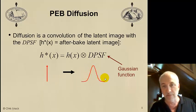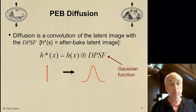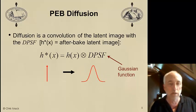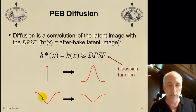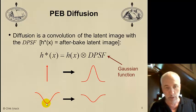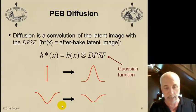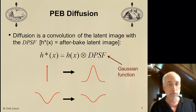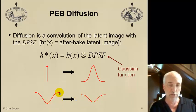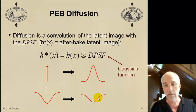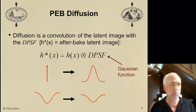This is the Gaussian function we're interested in. If I have some latent image — H of X, the concentration of acid after exposure — say this is the concentration for some line pattern exposed into the resist, concentration versus X, then after diffusion I get a new concentration gradient that is smeared out compared to the old. Why? Because acid in the high concentration region diffuses into the low concentration region, and we get a smeared-out profile. This is a review of diffusion and the concept of the diffusion point spread function.